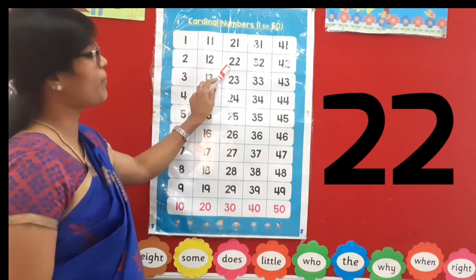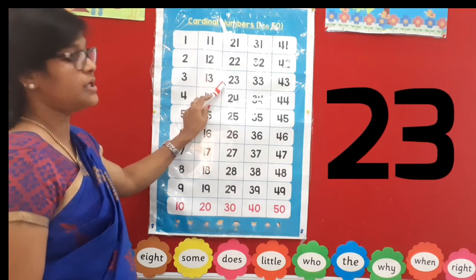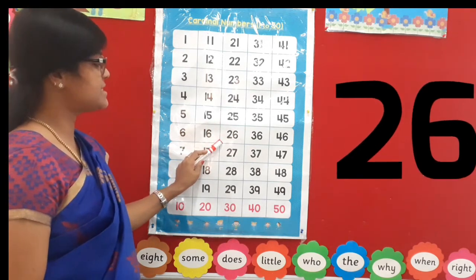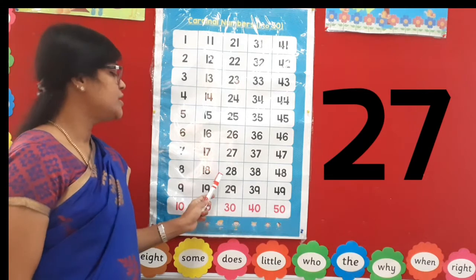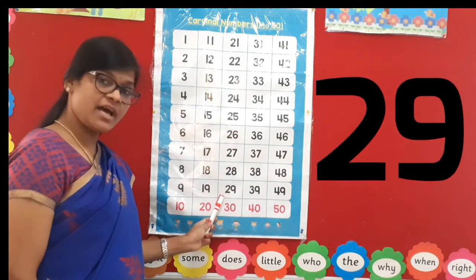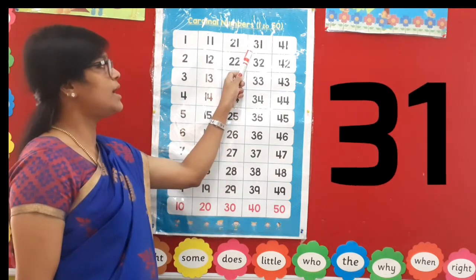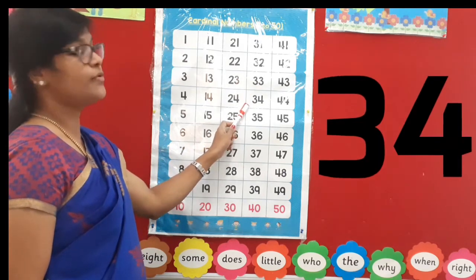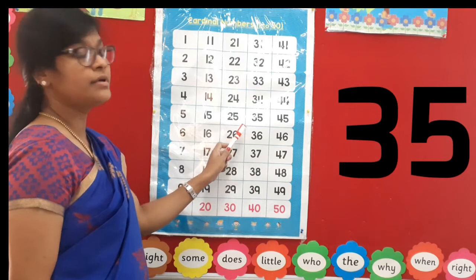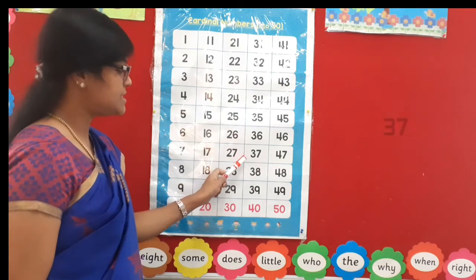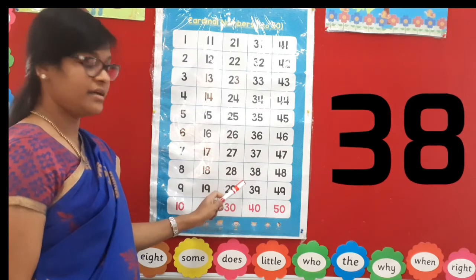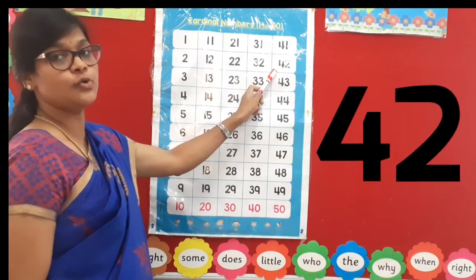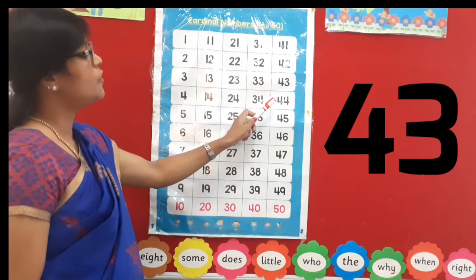20, 21, 22, 23, 24, 25, 26, 27, 28, 29, 30, 31, 32, 33, 34, 35, 36, 37, 38, 39, 40.